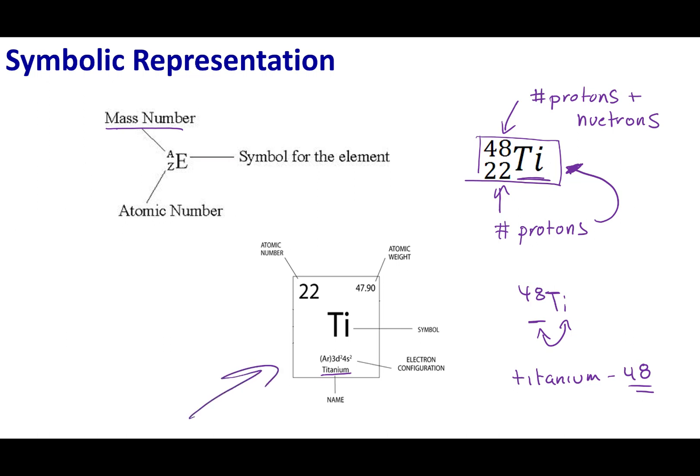On the periodic table, you guys see cards like this. Usually what will happen is they will name the element on the bottom. They'll put the elemental symbol in the middle. On the top left-hand side, they usually put the atomic number, and what they will do on the right-hand side is they usually have something that's the atomic weight.